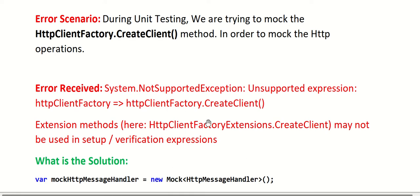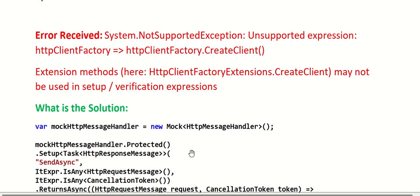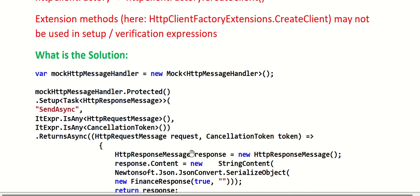The big question is: if we are not able to mock the HTTP client object itself, then how will we unit test our proxy services or external services which basically connect with external web APIs? There is a solution - the solution lies with the way we set up the mock for this HTTP client object.